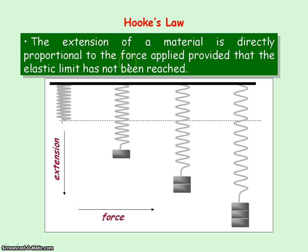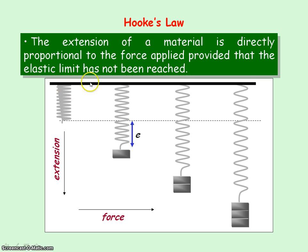Directly proportional means that they increase by the same ratio. Here we have a spring where no force is added, so it has an original length L. When you add a mass, the spring extends, so the extension is E — the new length minus the original length. If we were to double the mass, the force applied to the spring, because extension is directly proportional to the force applied, by doubling the force we'll double the extension.